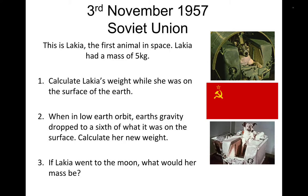Calculate Laika's weight on the surface of Earth before she got into space. Weight is mass times gravitational field strength: w = mg. The mass is 5 kilograms, and gravitational field strength on Earth is 9.8 newtons per kilogram. Multiply them together to give a weight of 49 newtons. When in low orbit, Earth's gravity dropped to a sixth of what it was on the surface. We need to divide 49 newtons by six, which gives us a new weight of 8.2 newtons.